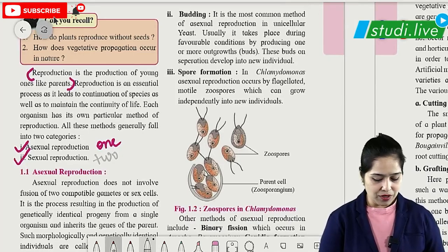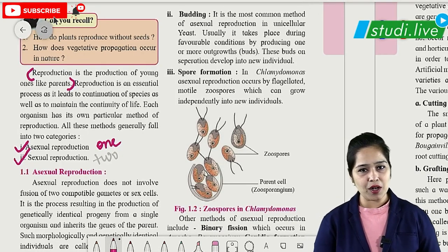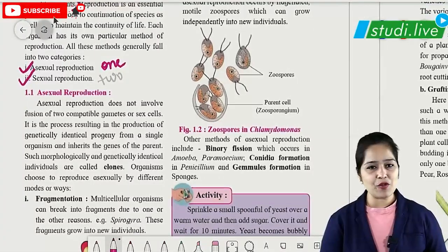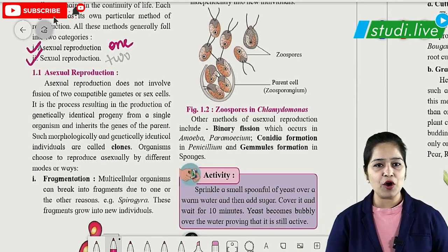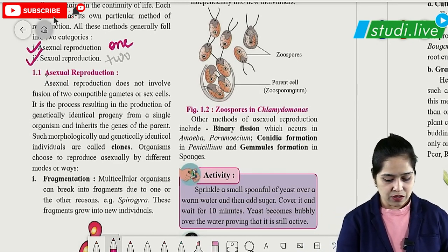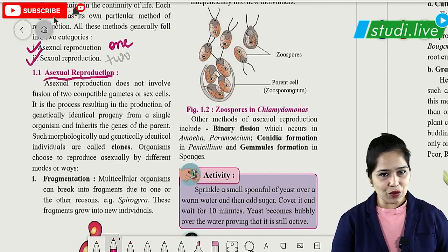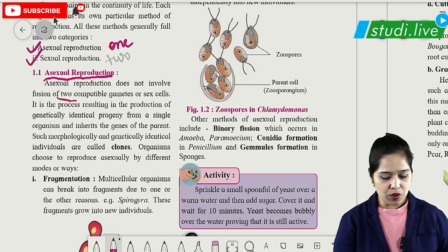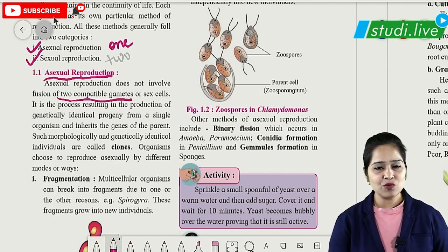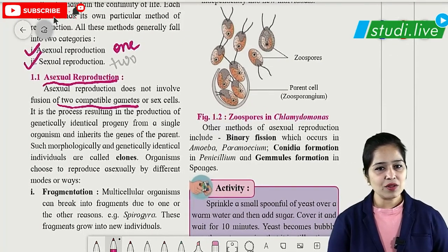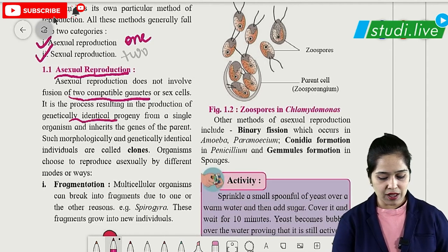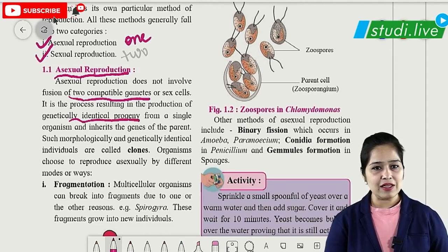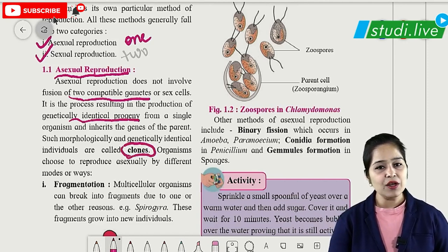In asexual reproduction in lower organisms, there is no fusion of two compatible gametes — no fusion of sex cells. That is why we have production of genetically identical progeny. The children obtained are genetically identical to each other and are therefore called clones.